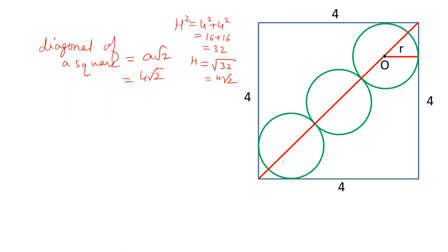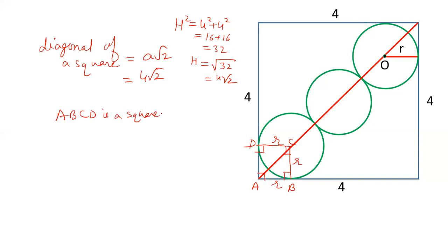Now let's draw this line. This line is r, and this line is also r because that is the radius of the circle. This 90 degree angle — this is already 90 degrees, so this part is a square. Let's name this square A, B, C and D. The diagonal A, C will be the same: a root 2. So A, C is a root 2.